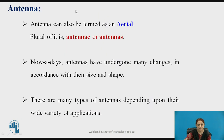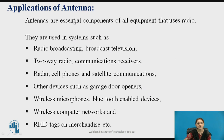An antenna can also be termed as an aerial — the plural is antennae or antennas. Nowadays antennas have undergone many changes in accordance with their size and shape. Antennas are essential components of all equipment that uses radio. They are used in systems such as radio broadcasting, broadcast television, two-way radio communication receivers, radar, cell phones, and satellite communication. Other devices include garage door openers, wireless microphones, wireless computer networks, and RFID tags.